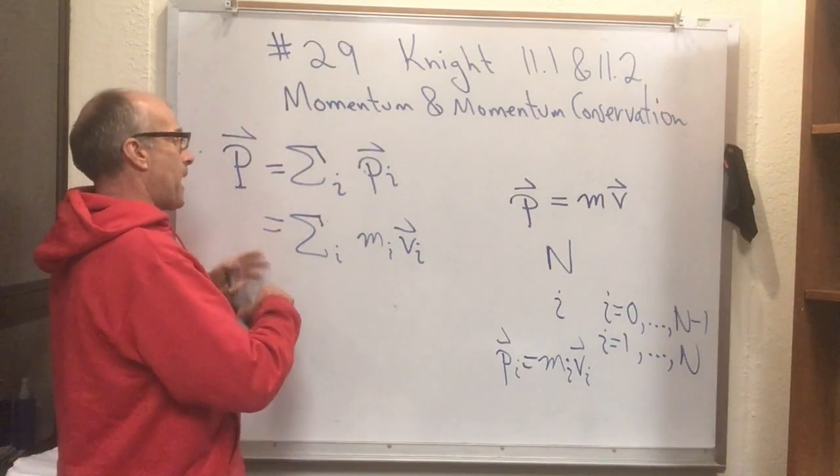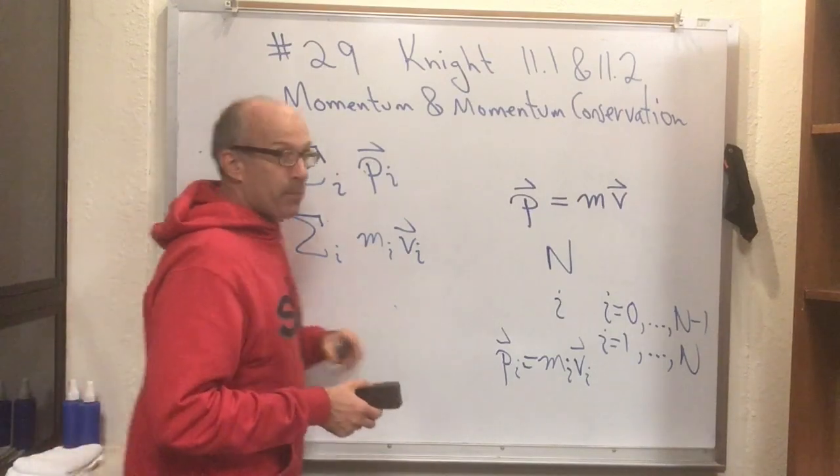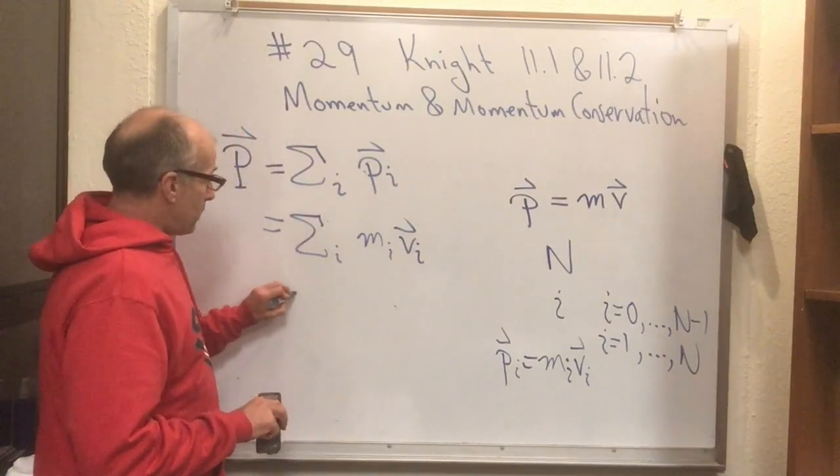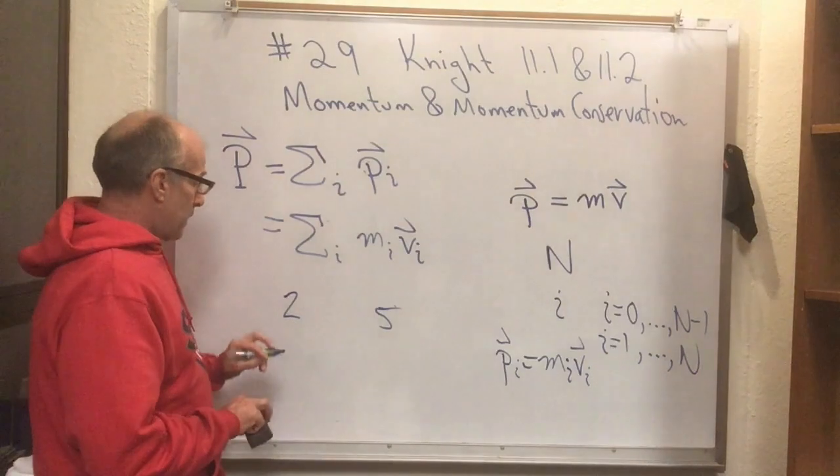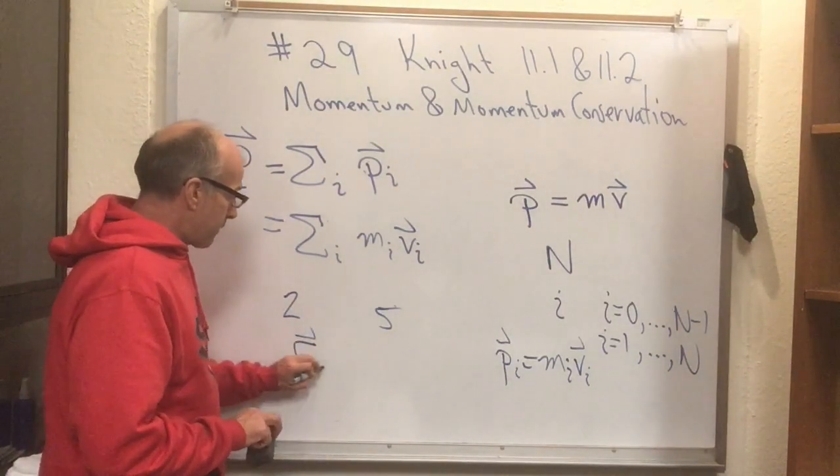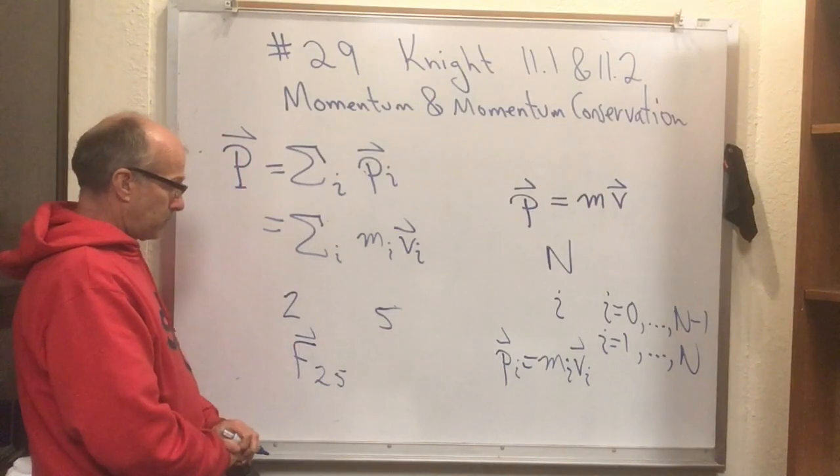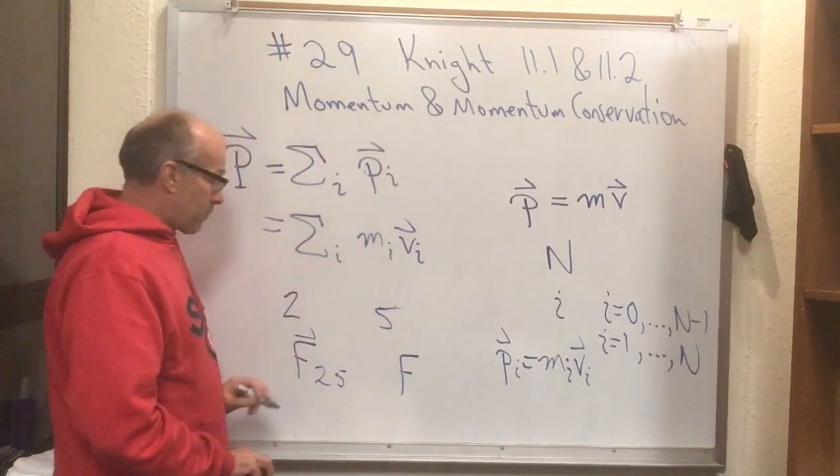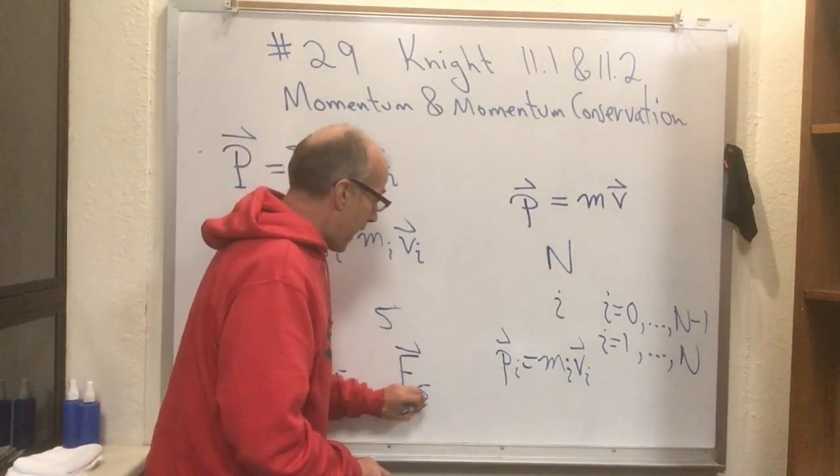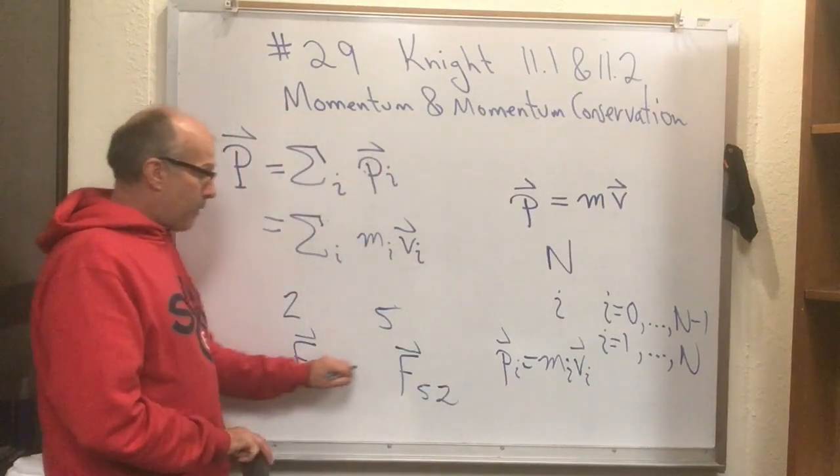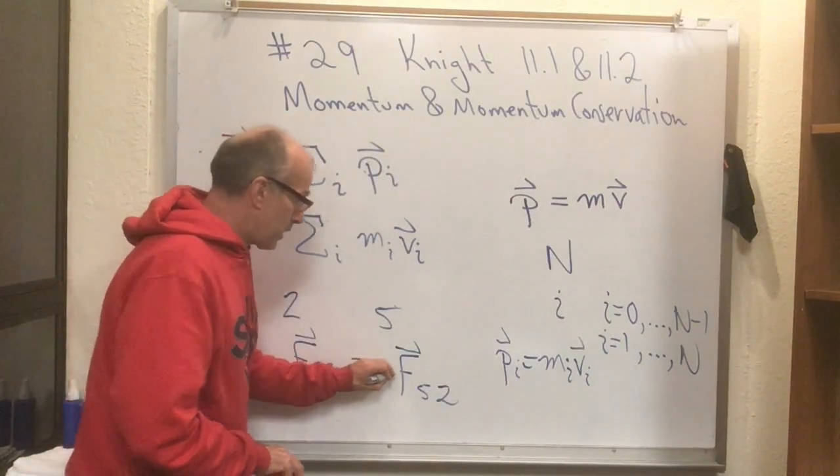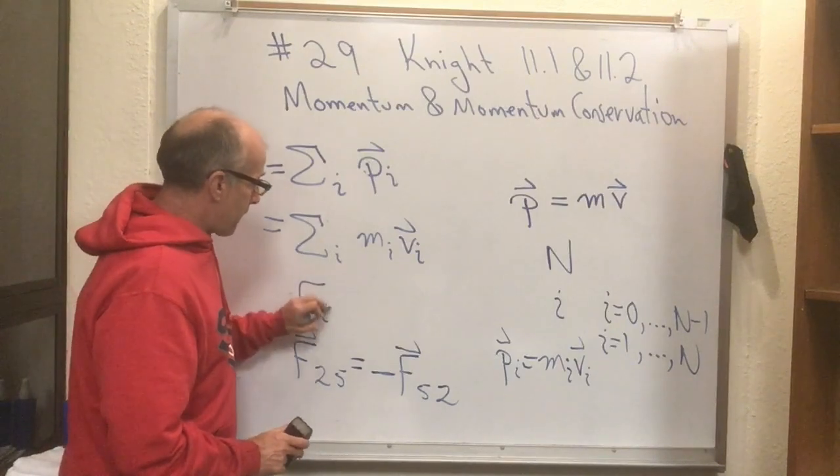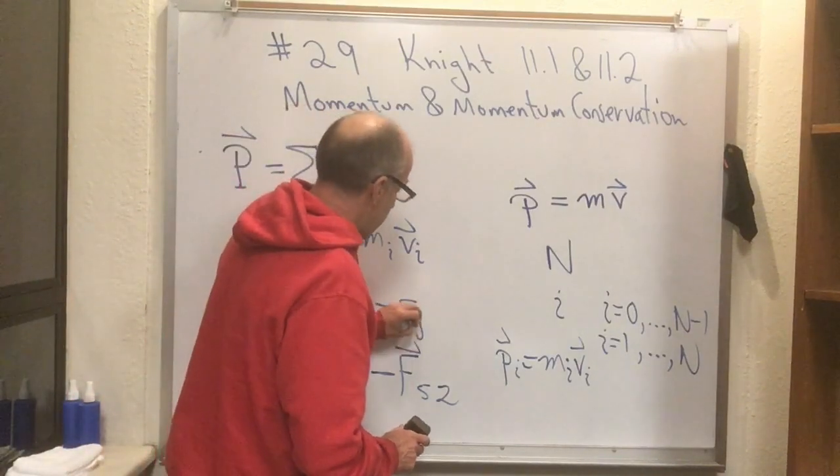Now, if you have a whole pile of particles in a system, they each might be pushing on each other. So, particle two might be pushing on particle five. And the way we write that is the force of two on five. Of course, we know from Newton's third law that if particle two is pushing on particle five, then particle five is pushing back on particle two. And we know those two are equal in magnitude and opposite in direction. And this is true for any pair of particles that F_ij equals minus F_ji.